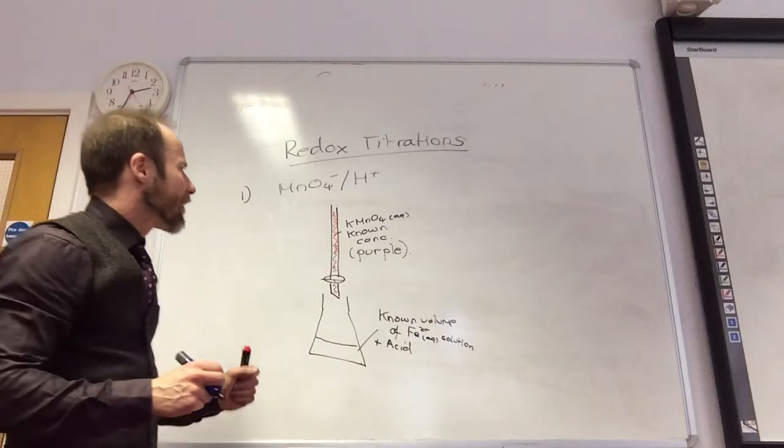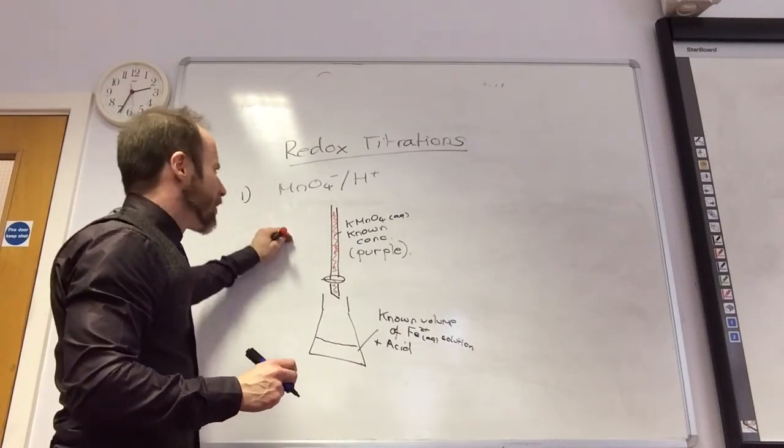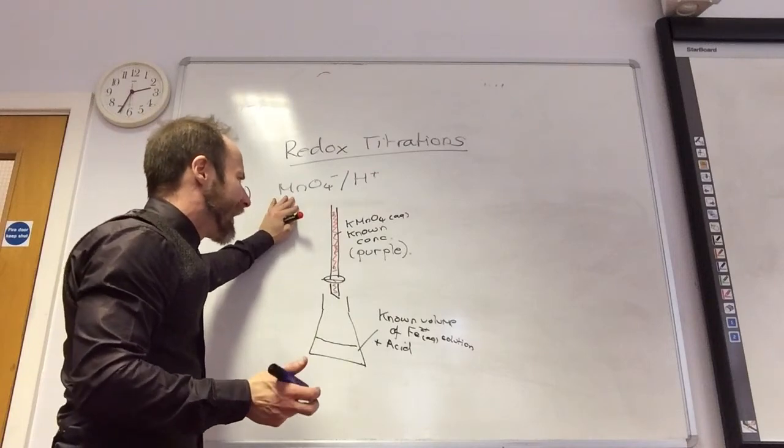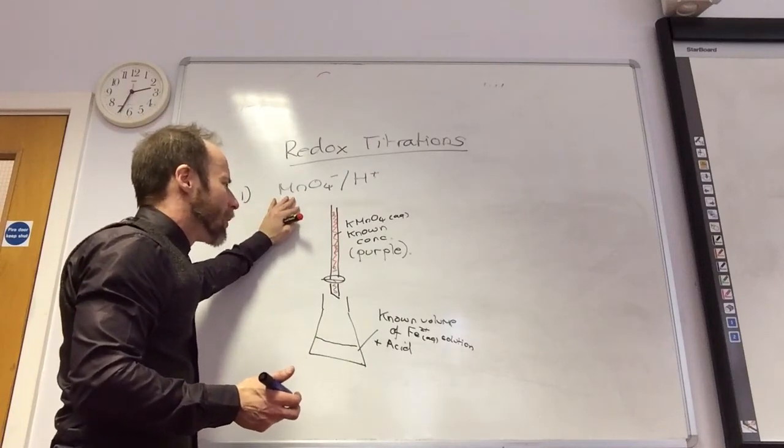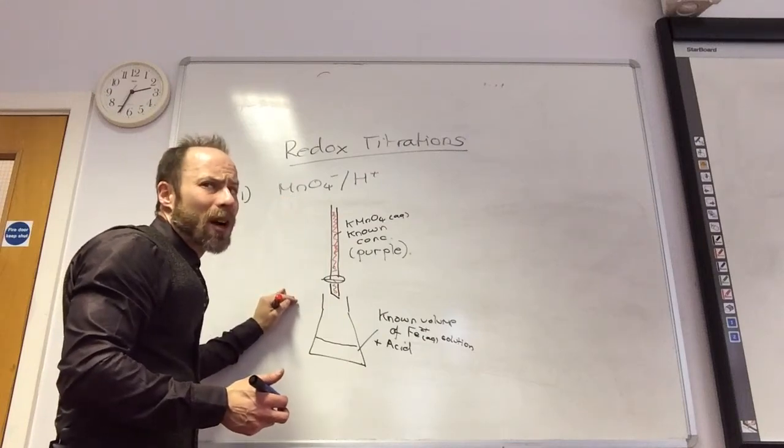So you have to know the half equations for these two. So you need to know the half equation for the manganate reaction, MnO4 minus, and also the half equation for what's happening to iron.